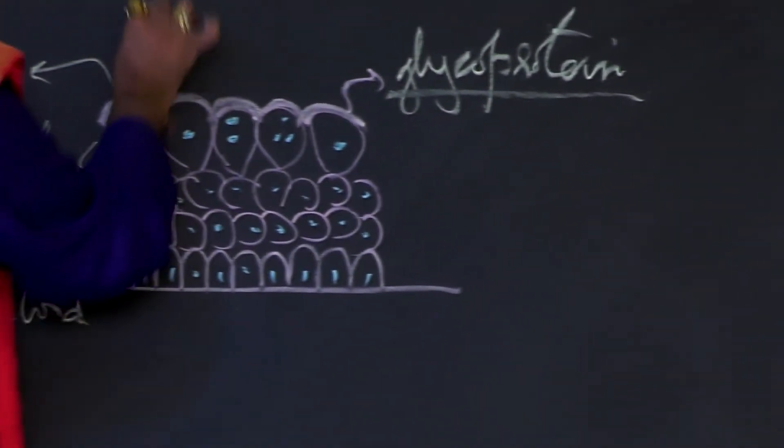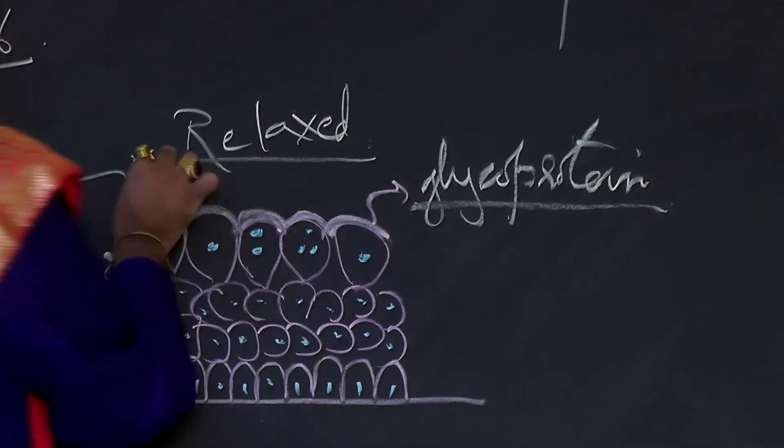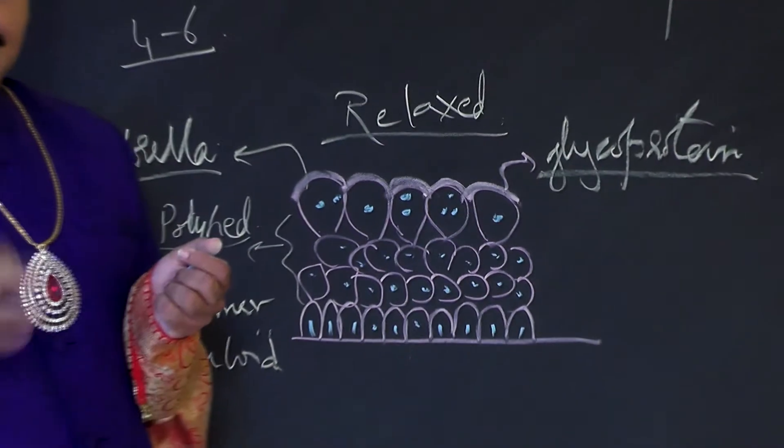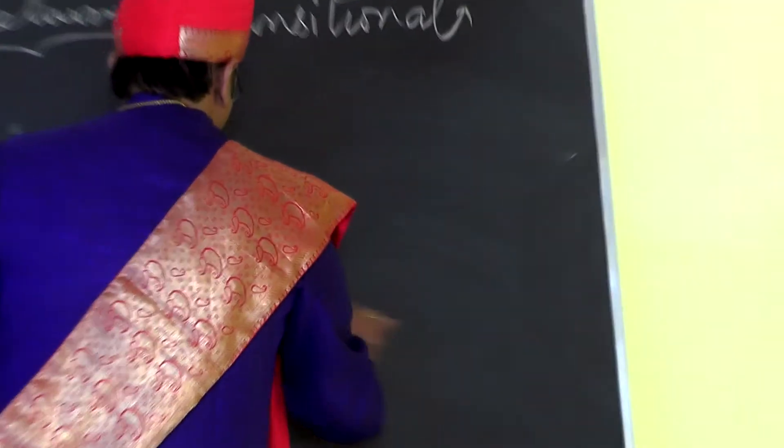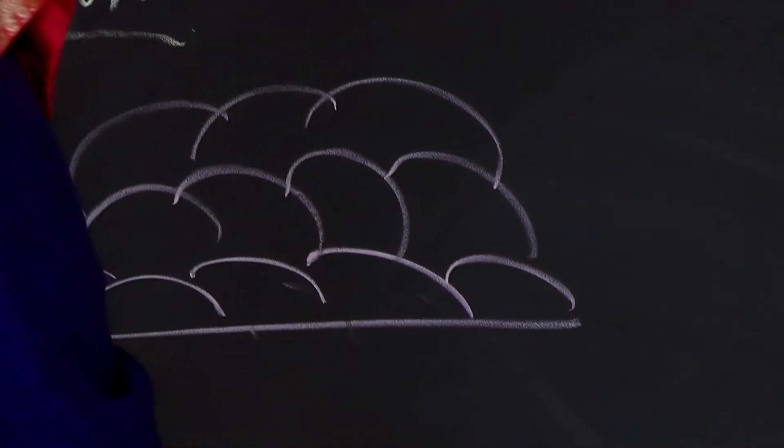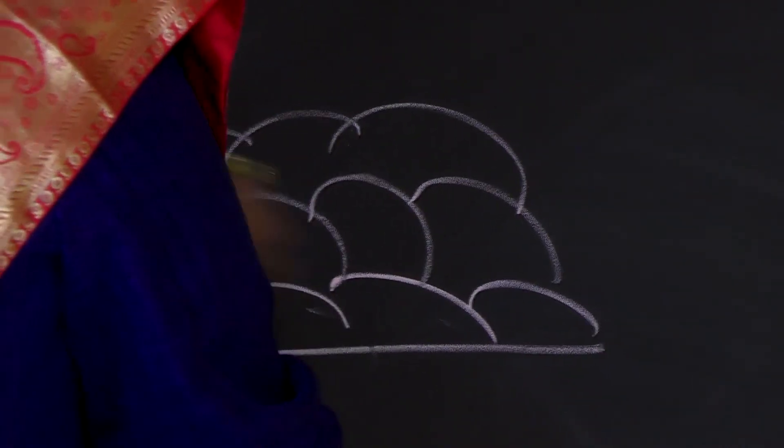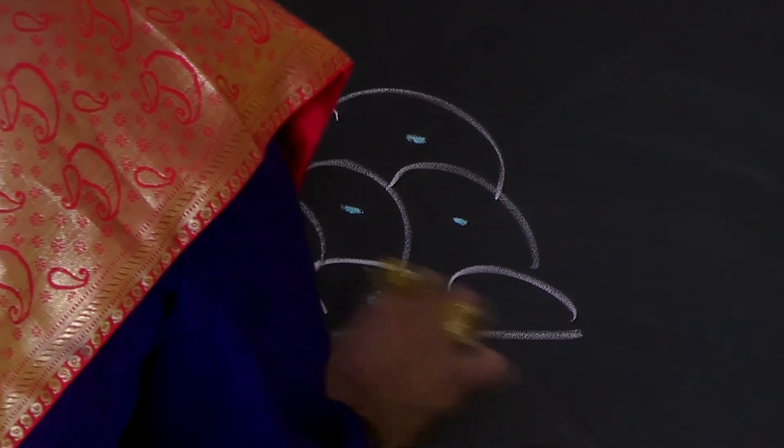When the bladder is relaxed—that is, when the bladder is empty after passing urine—you get this appearance of the transitional epithelium. Whereas when the bladder is filled with urine, the cells appear flattened.